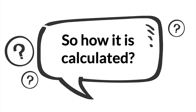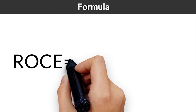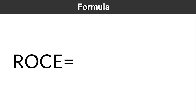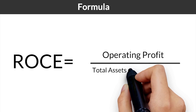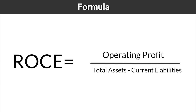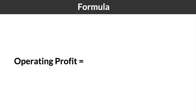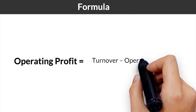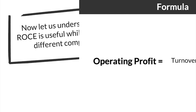So, how is ROCE calculated? Let us look at the formula given on your screen. ROCE equates to operating profit made by a company divided by the total capital employed. This also includes the long-term debt taken by the company. While operating profit stands for the profit generated from the total turnover, less the operating expenses.